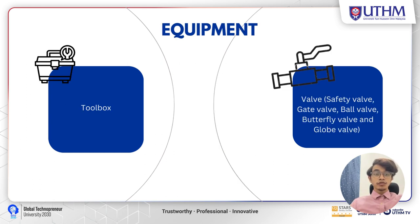For equipment, we only use two items. The first is the toolbox, which includes a spanner, screwdriver, and so on. The second is of course the valves: the safety valve, the gate valve, the ball valve, the butterfly valve, and the globe valve.